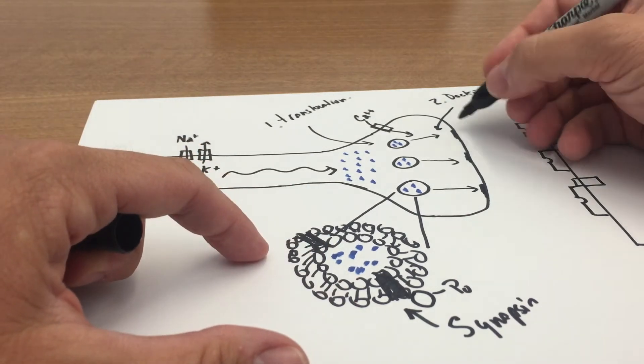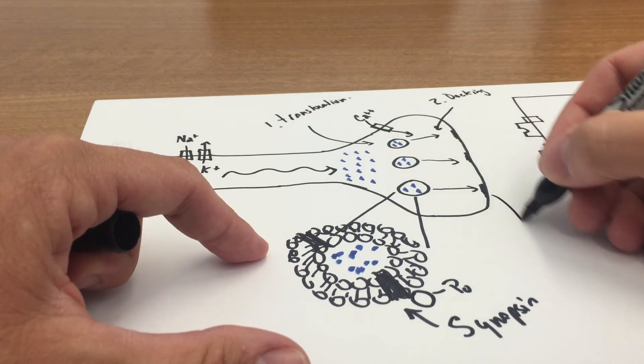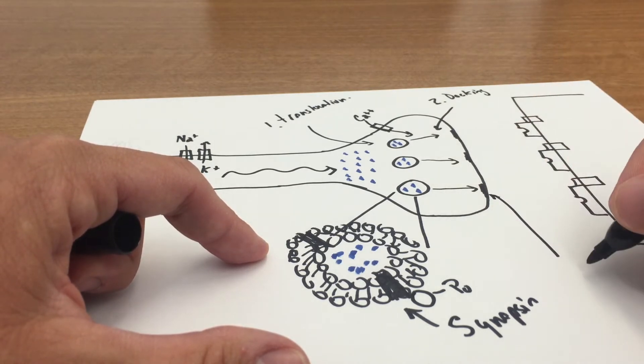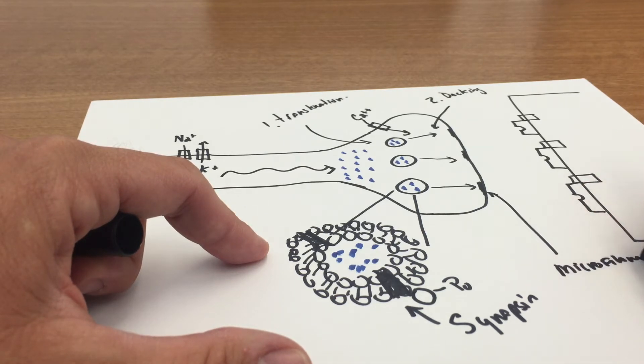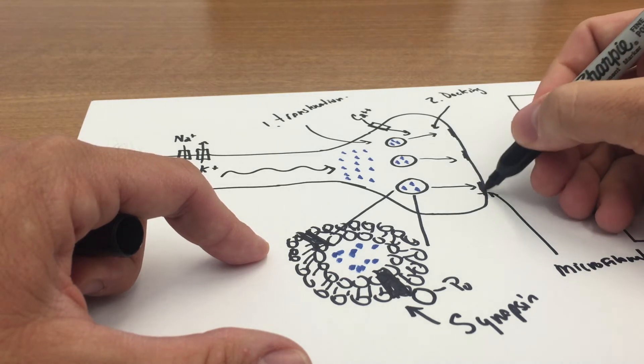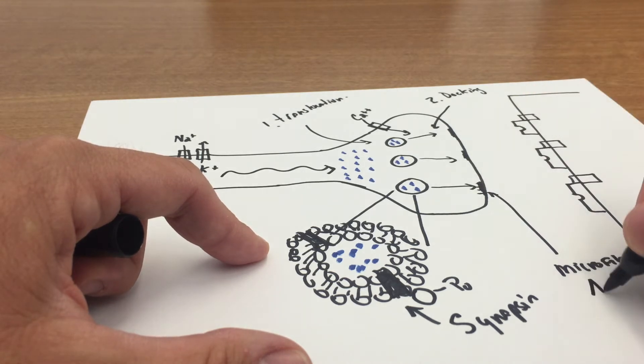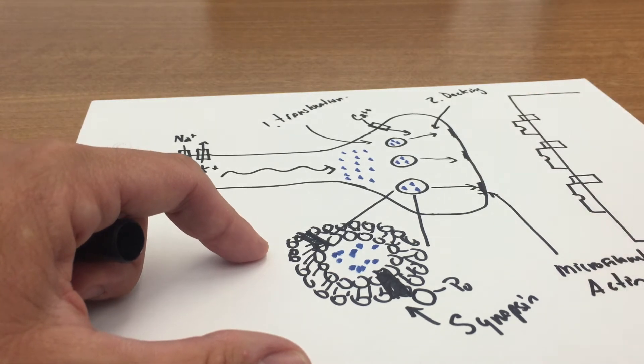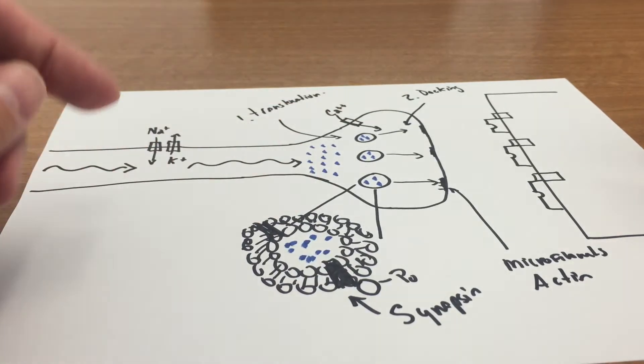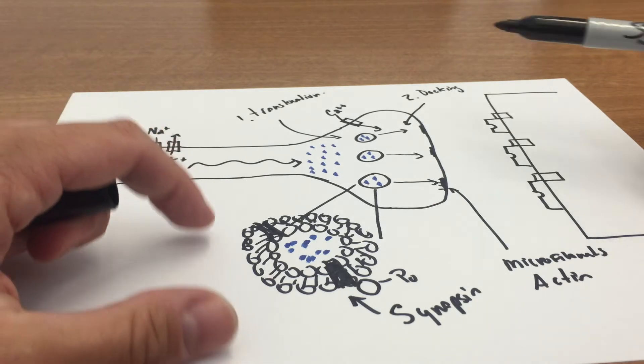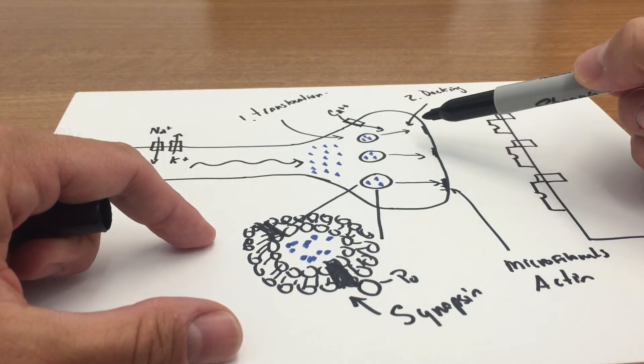Then what you have in the active site here are these little microfilaments built into the active site, and these contain actin, the same actin when we talk about actin and myosin of muscle contraction. So what happens, or we think happens, is this calcium enters into the cell.